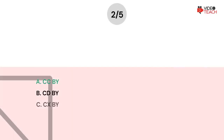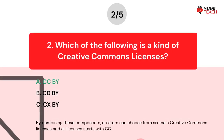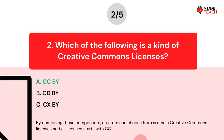The correct answer is Option A. By combining these components, creators can choose from six main Creative Commons licenses, and all licenses start with CC.